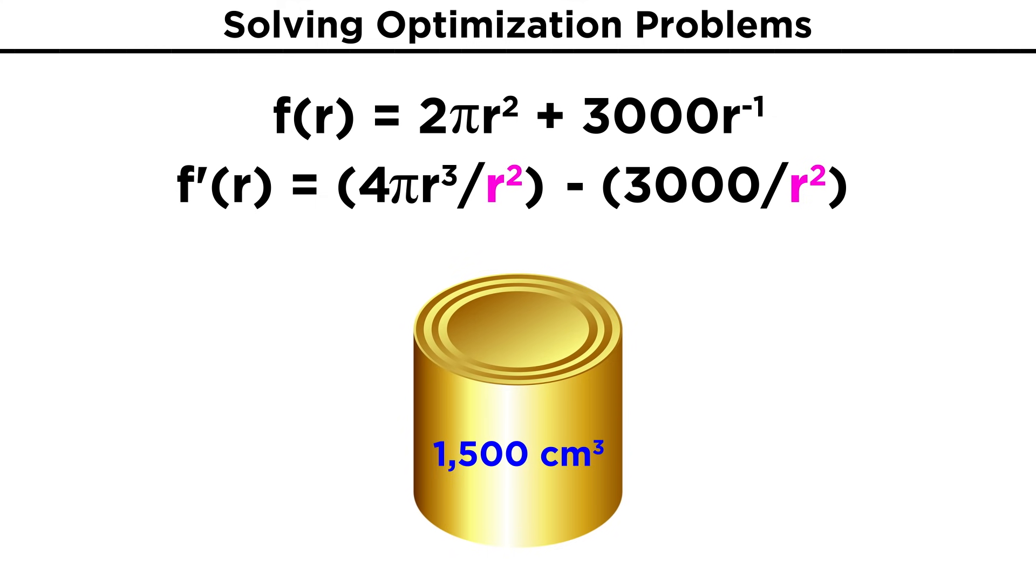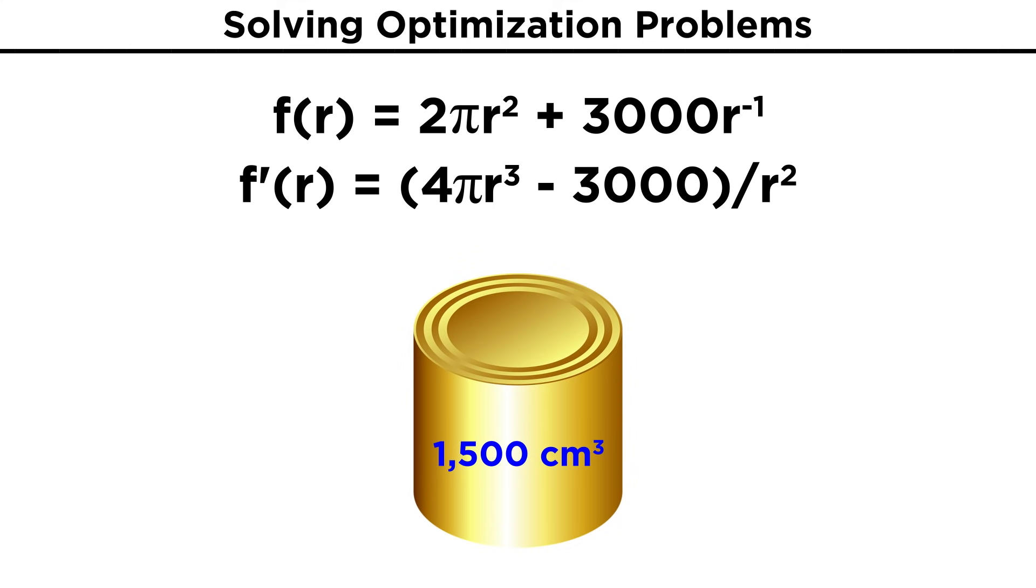If we get a common denominator here, we can combine the terms. And we are left with this, (4πr³ - 3000)/r².